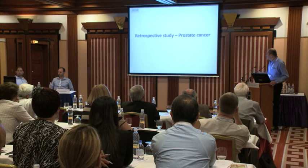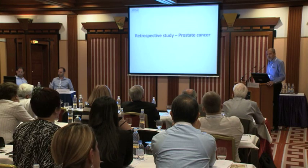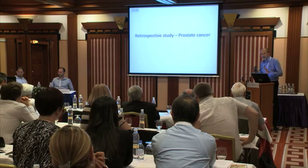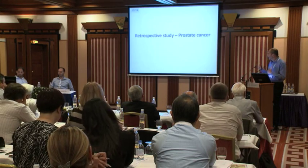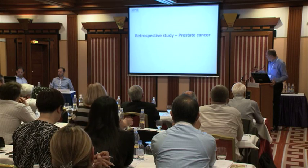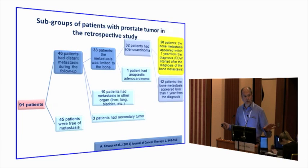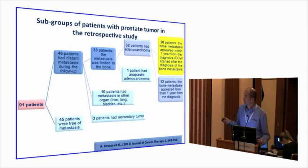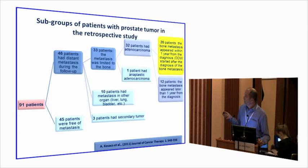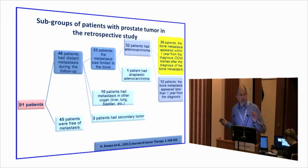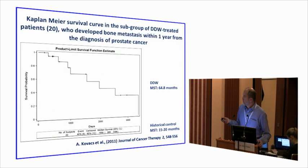In a very homogeneous population with precise historical controls: outside the phase two trial, we had 91 additional prostate cancer patients. Of these, 46 had distant metastases — 33 limited only to bone, 32 were adenocarcinoma, and 20 had bone metastasis within one year of diagnosis. The median survival time was 64.8 months versus a historical control of 15–20 months — a threefold increase. In a subgroup of 12 patients whose bone metastasis appeared later than one year after diagnosis, with a cumulative follow-up over 100 years, we could not calculate median survival time: only two of twelve died.